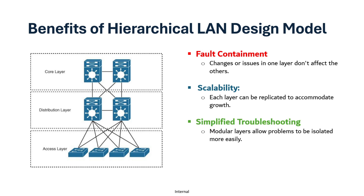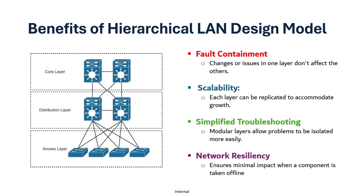Then there is simplified troubleshooting — these modular layers allow problems to be isolated more easily. If you have a problem with the user, you troubleshoot on the access layer; if you have a routing problem between layers, that points to the distribution layer. And then there is network resiliency, which ensures minimal impact when a component is taken offline. For example, if one access layer switch goes down, it will not affect others.